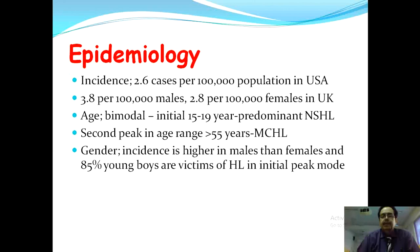In the first peak, the variety of Hodgkin's lymphoma is nodular sclerosing, and in the older people — the second peak — the variety is mixed cellularity Hodgkin's lymphoma. Regarding gender, incidence is far higher in males than in females; 85% of young males are victims in the initial peak mode, meaning only 15% of females are likely to suffer in the initial peak mode.